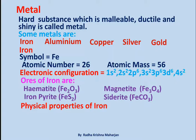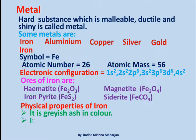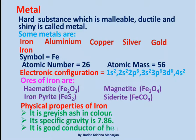Physical Properties of Iron: It is grayish-ash in color. Its specific gravity is 7.86. It is a good conductor of heat and electricity.